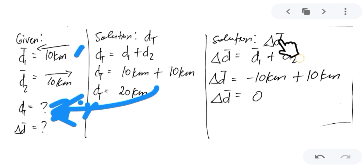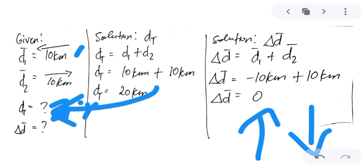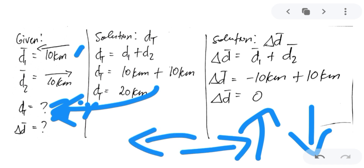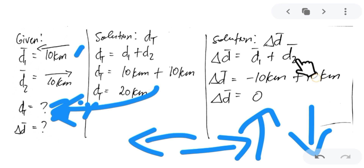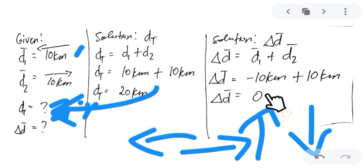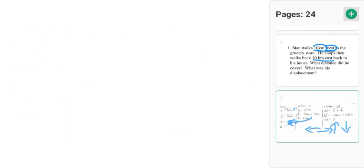To find the displacement, you add the individual displacements considering direction. North is positive, south is negative, west is negative, east is positive. So for the first displacement, 10 km west is negative 10 km. Plus the second displacement, 10 km east, which is positive. So negative 10 km plus 10 km equals 0. Whenever a person goes back to their original position, the displacement is 0. So the displacement here is 0.